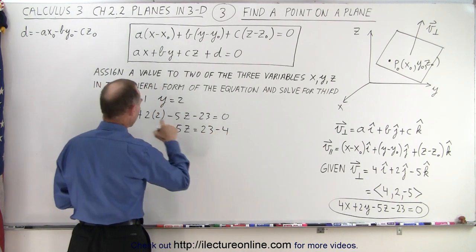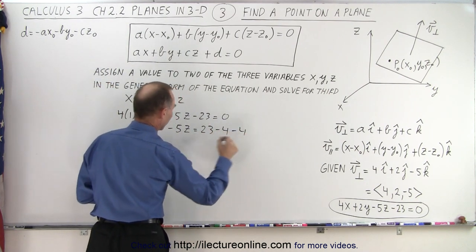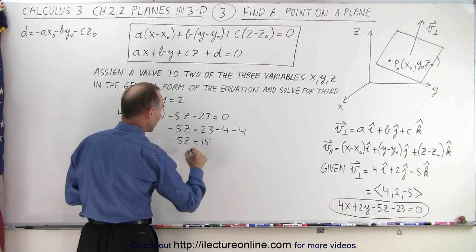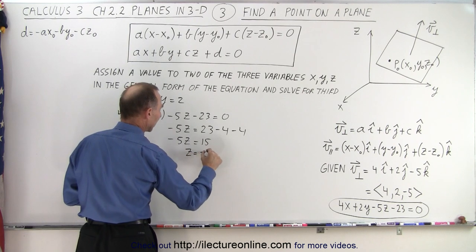So we have minus 5z is equal to 23 minus 8, which is 15, which means that z is equal to negative 3.